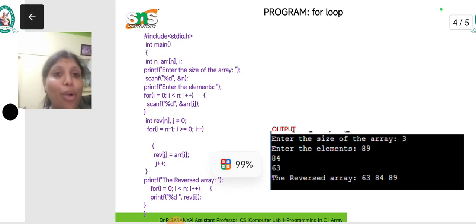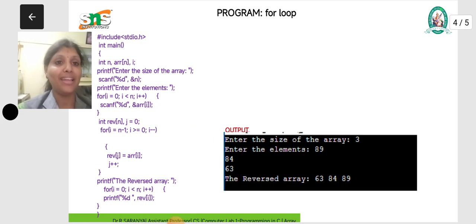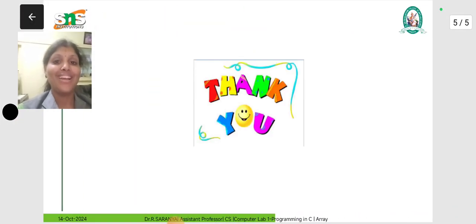Hope you understand how to reverse an array. See the output. Enter the size of an array, 3 values we have to print. Enter the elements. Both 3 values you have to print. Finally, 3 values we have to reverse. In this way, we have to design an array program. Hope you understand. Happy learning. Thank you.